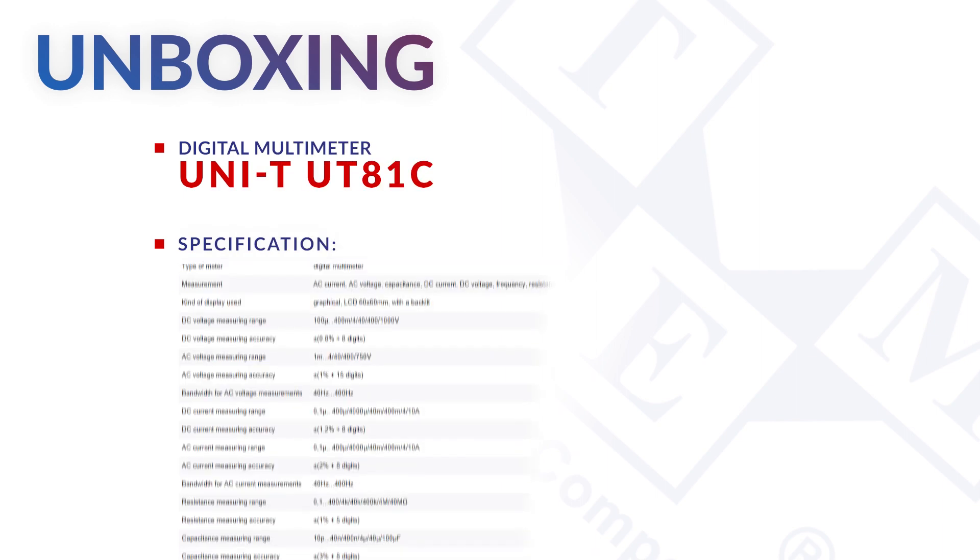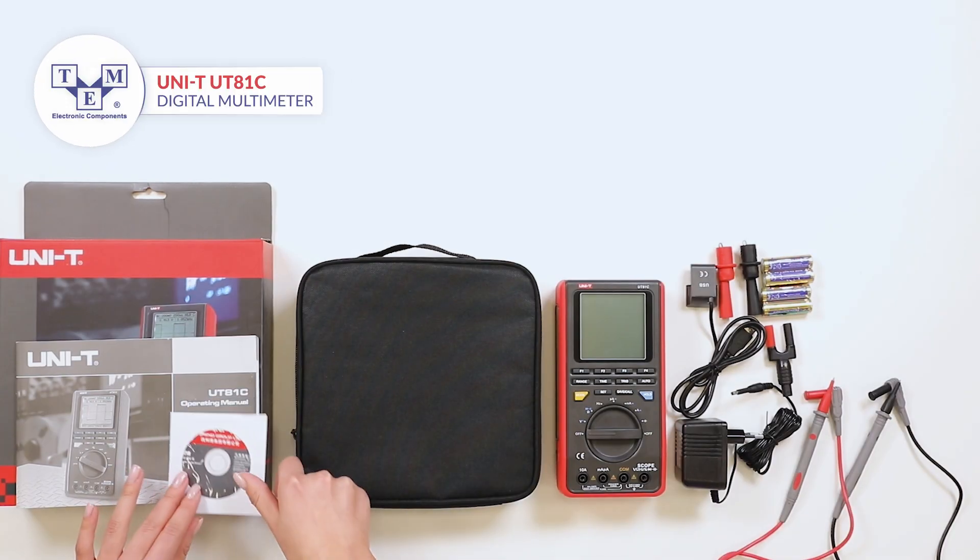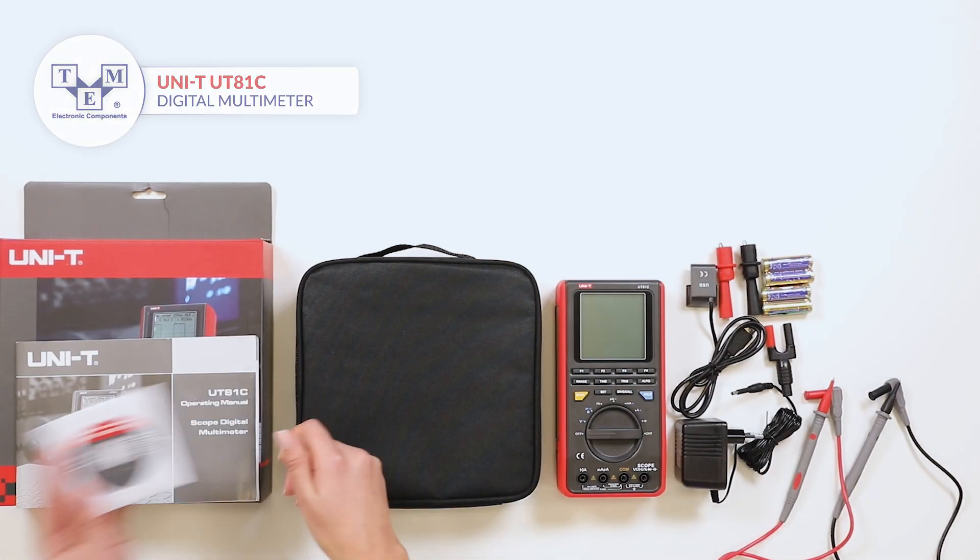The UNI-T UT81C is a scope digital multimeter that measures AC and DC voltages and currents, resistance, capacitance, frequency and duty cycle.